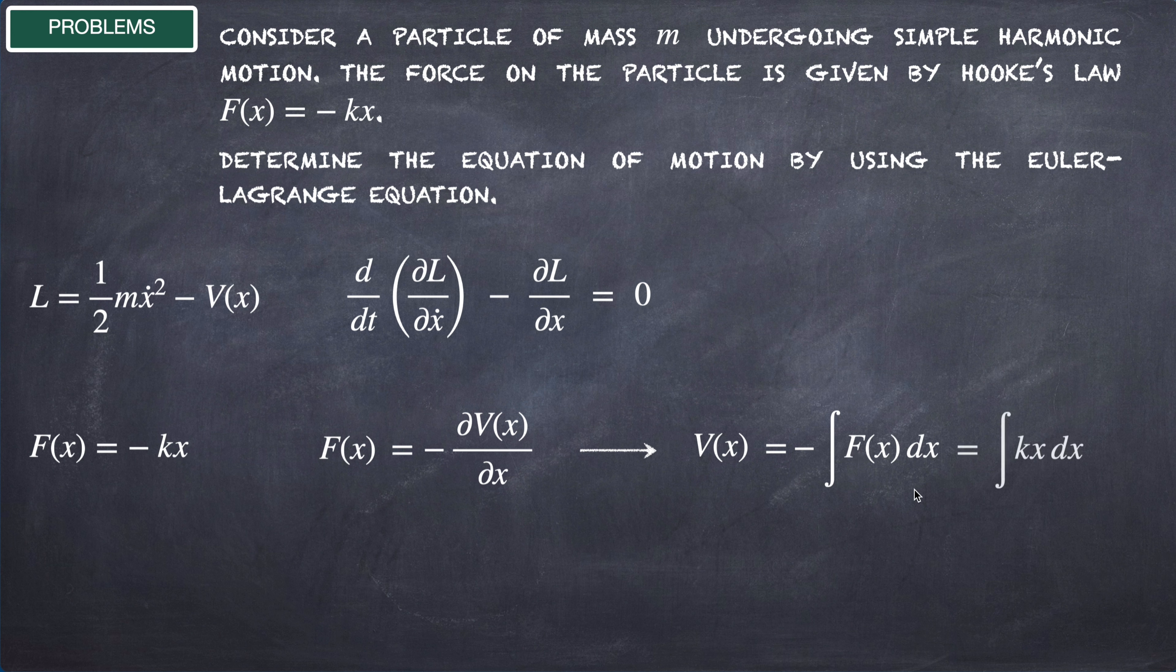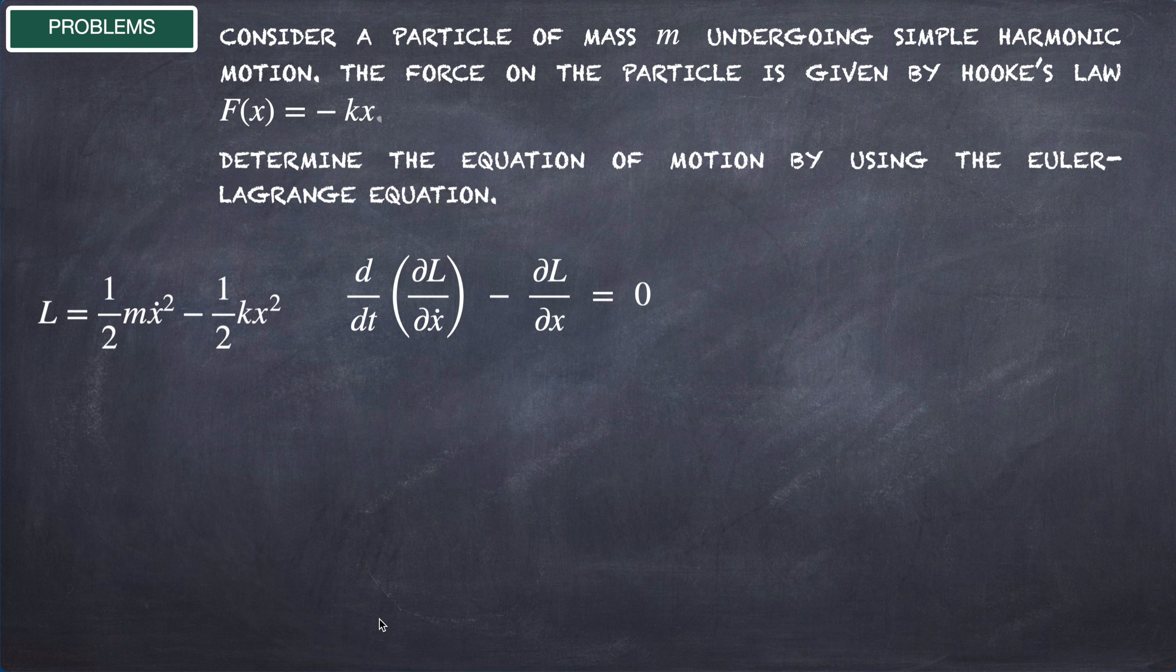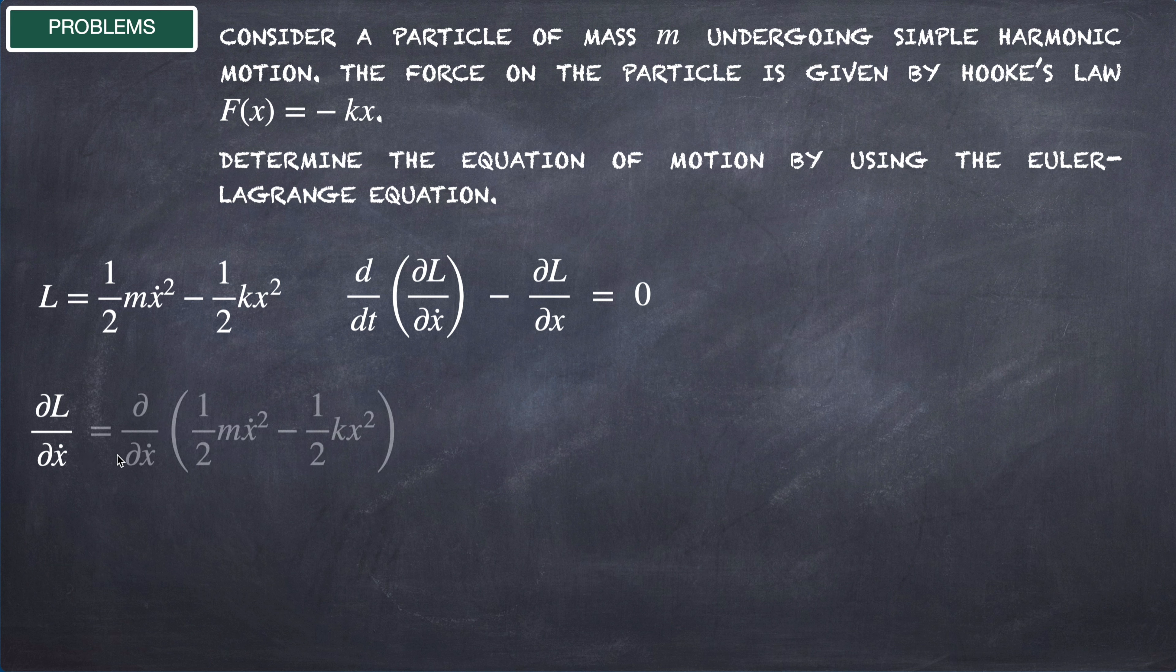Solving this integral we get ½kx². Then our Lagrangian function is the kinetic energy, ½mẋ², minus the potential energy, ½kx². Now let's calculate the partial derivative of the Lagrangian with respect to ẋ.